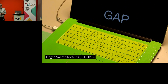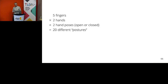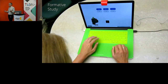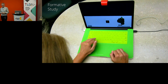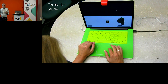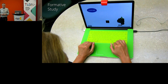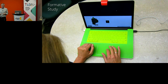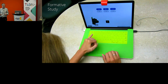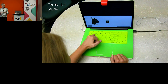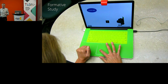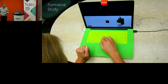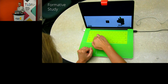So we have this big potential input space — 20 different postures per key press. We ran a study looking at what are the right postures — which are most comfortable — controlling for whether key presses come after mouse use, touchpad use, or after typing. We had a formal experiment where participants typed a little, then entered one of these poses, then typed again or used the mouse, and again entered a pose. We measured time, error, and subjective preference.